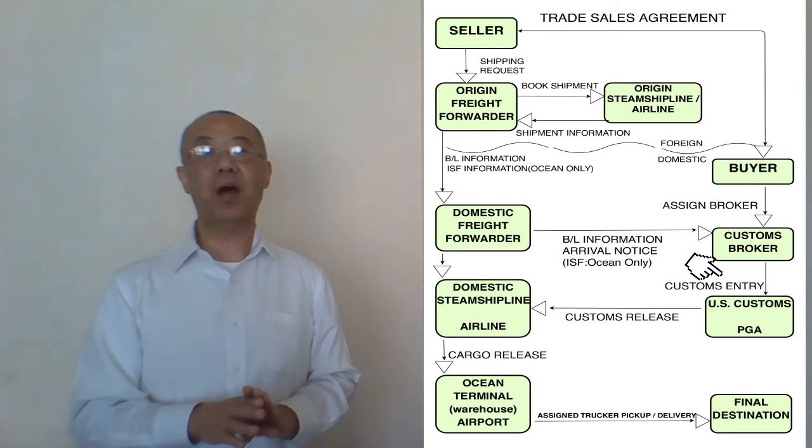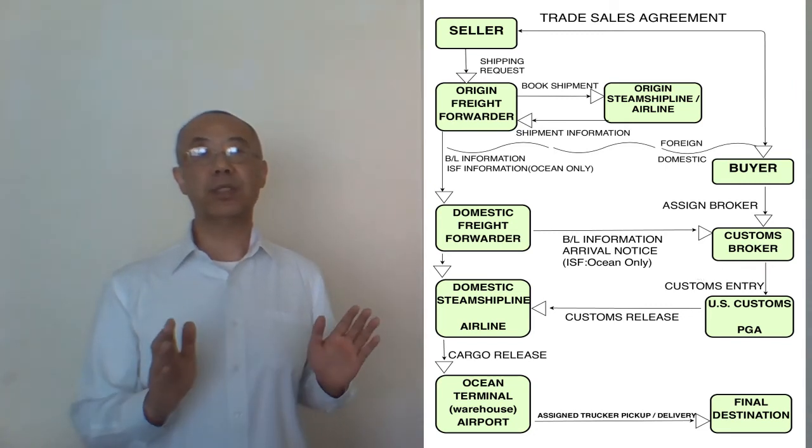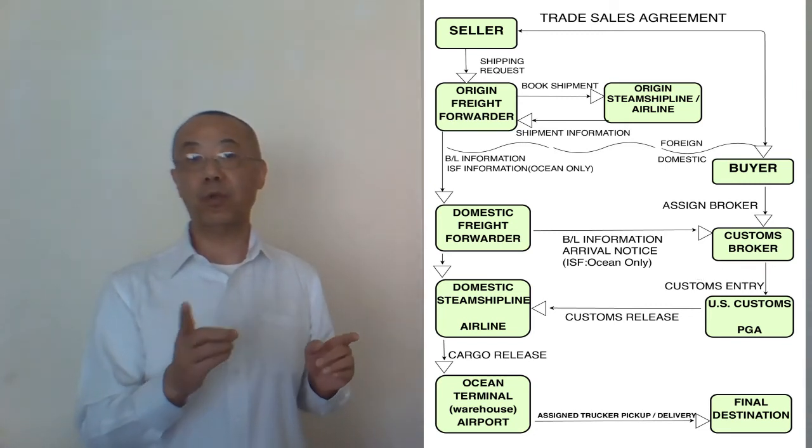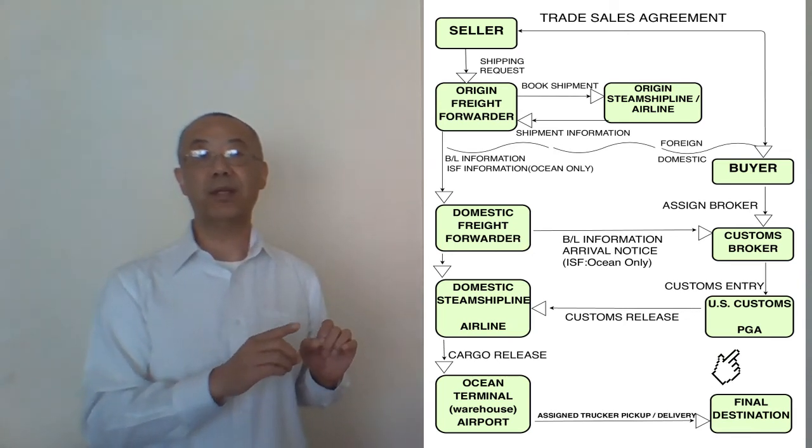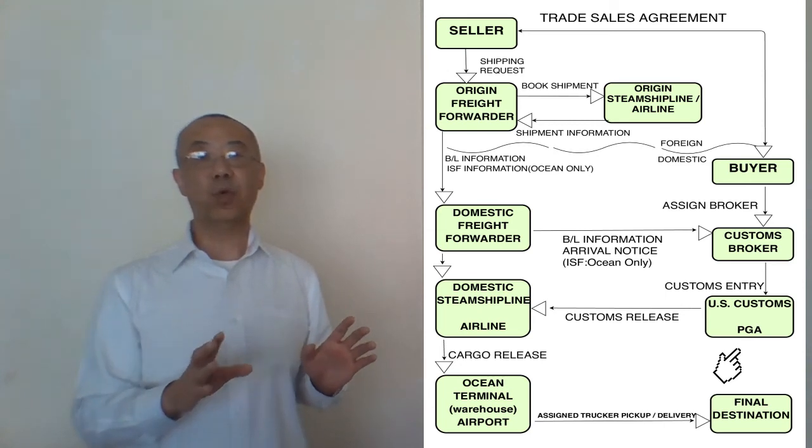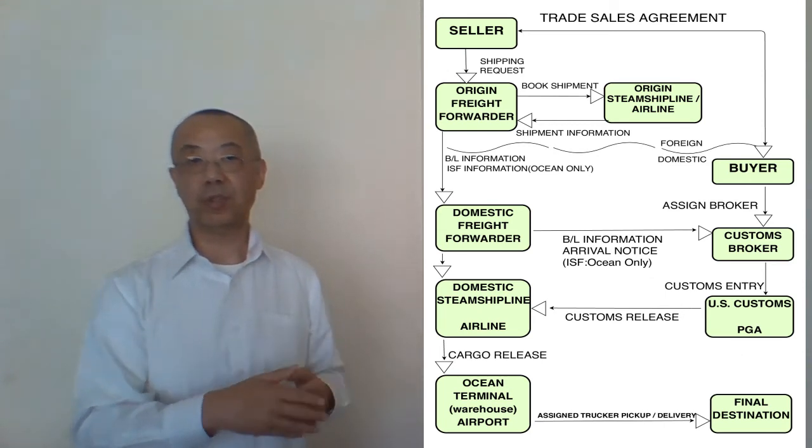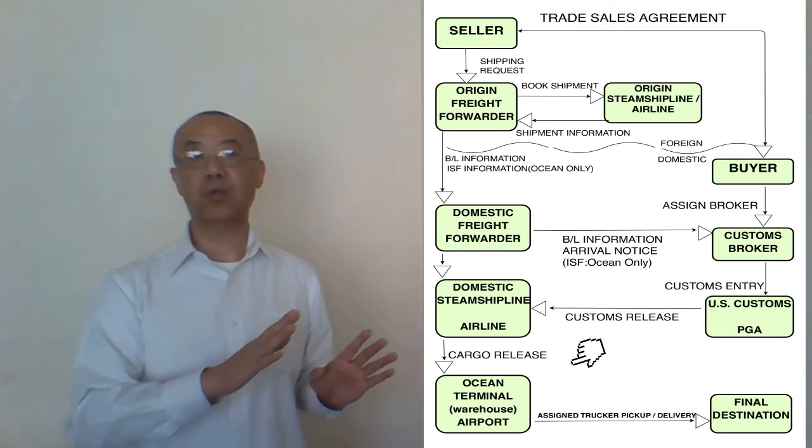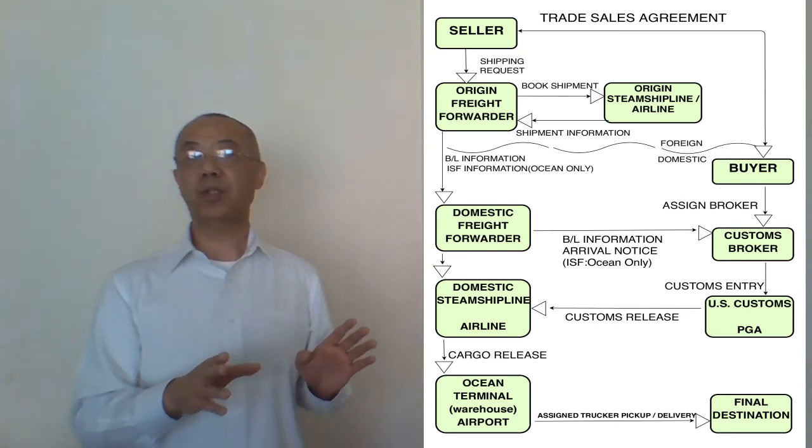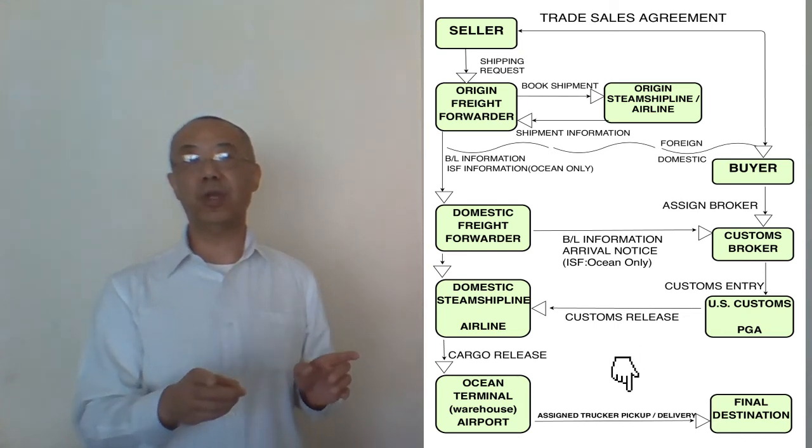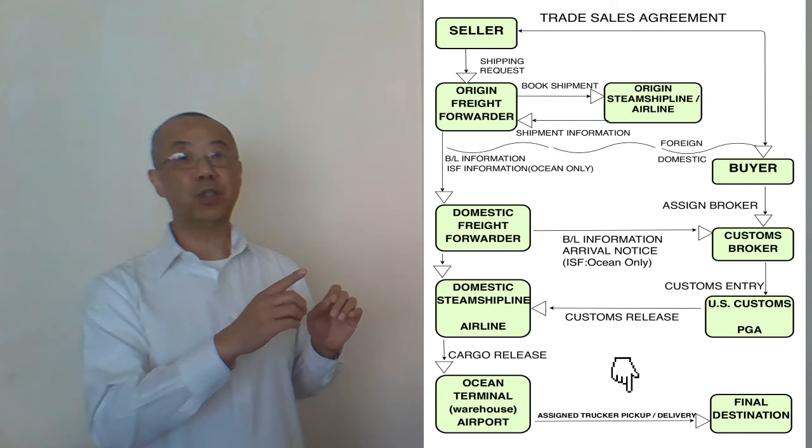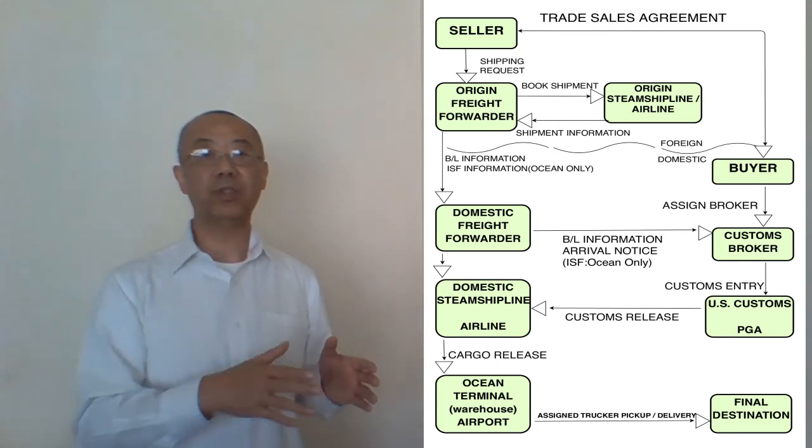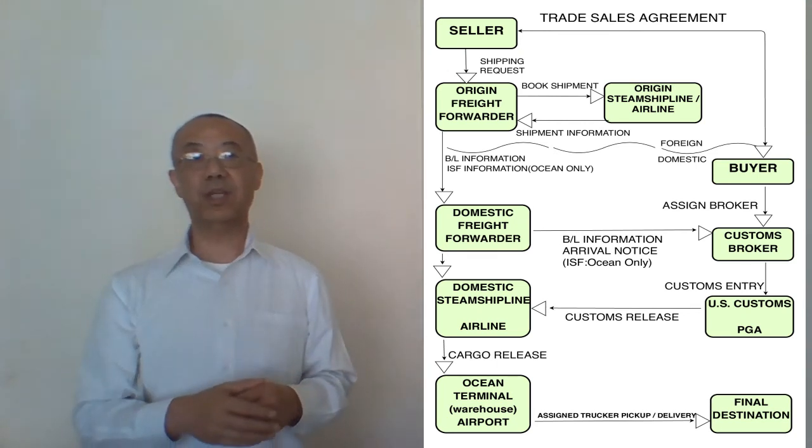At the time of customs clearance, US Customs may hold cargo and require examination, or a partner government agency may require some additional documents or other examinations. Once the cargo is released at the ocean cargo terminal, the US domestic buyer's designated carrier will arrange to pick up and deliver the cargo to the final destination.